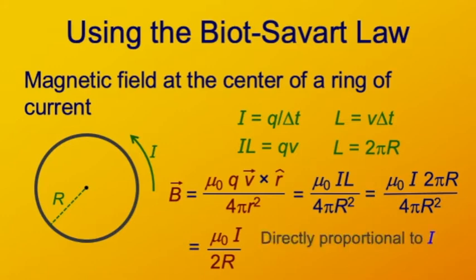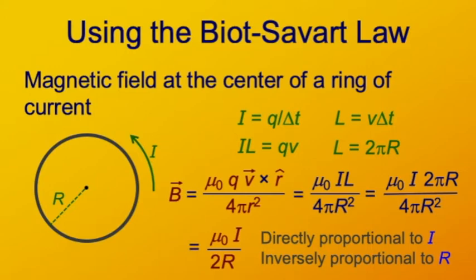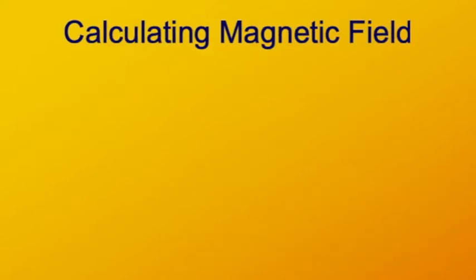This magnetic field is directly proportional to the current — as you increase the current, the field increases proportionally. It's also inversely proportional to R, so the bigger the ring, the smaller the field at the center, which makes sense because it's farther away. In general, it's difficult to do analyses like this for more complicated systems.